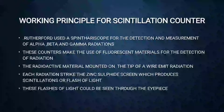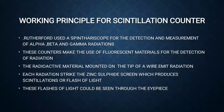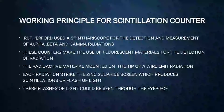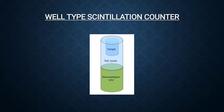Rutherford discovered the first scintillation counter, named the spintariscope, for the detection and counting of alpha, beta, and gamma radiations. These counters use fluorescent material for detection. The radioactive substance mounted on the tip of a wire emits radiation; each particle strikes the zinc sulfide screen, producing a flash of light visible through the eyepiece. The flashes per second are counted to find the intensity of radiation, and it is possible to count alpha particles from 50 to 200 per second.